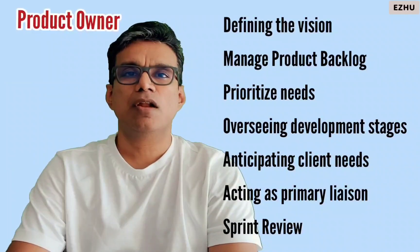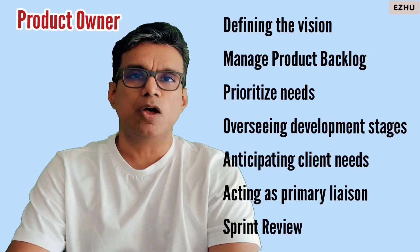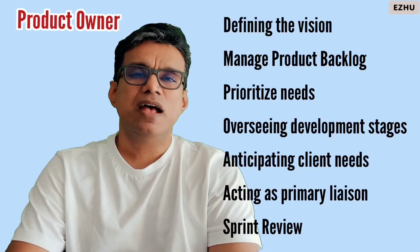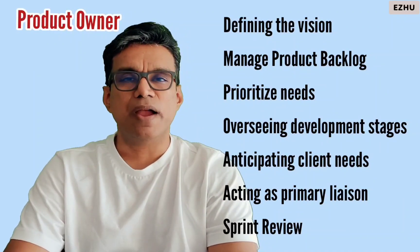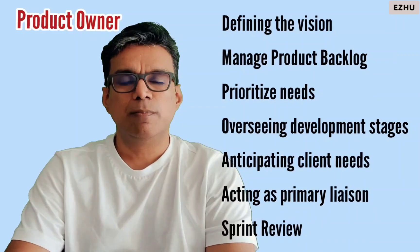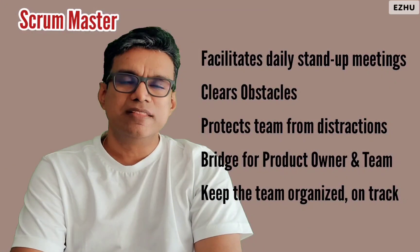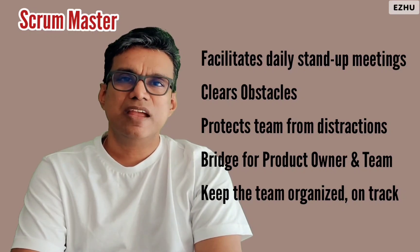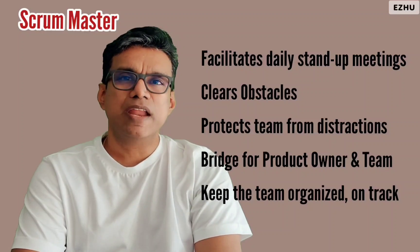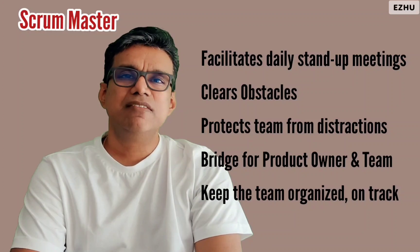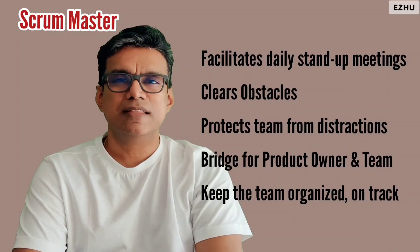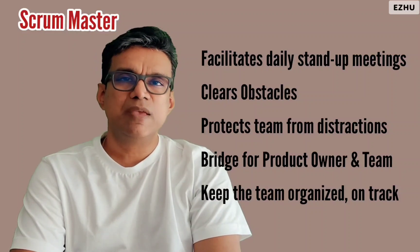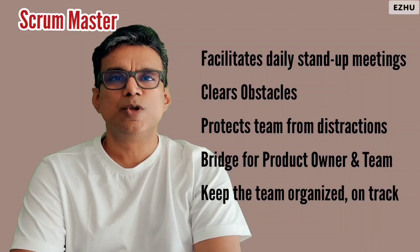The product owner prioritizes the list of items from the product backlog for a particular sprint, participates in sprint planning and sprint review, and is the final decision maker on the product backlog. The Scrum master facilitates the daily stand-up meetings, ensures there are no bottlenecks or impediments, and acts as the link between the product owner and the team. He ensures standards are followed and keeps the team's progress transparent and visible to all parties.